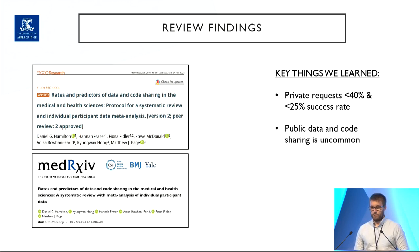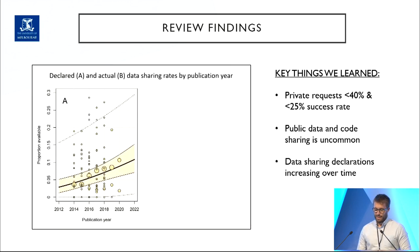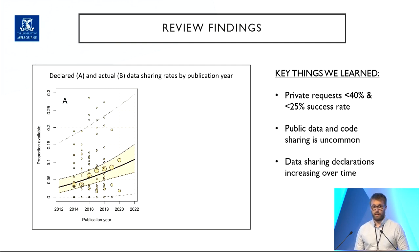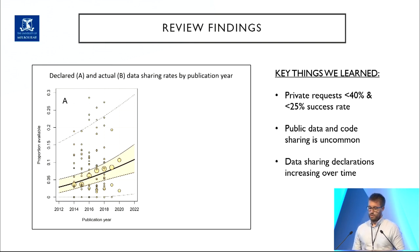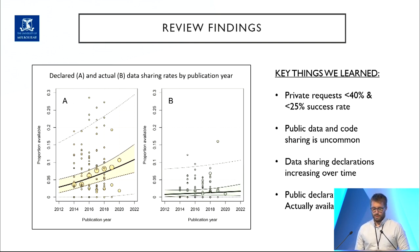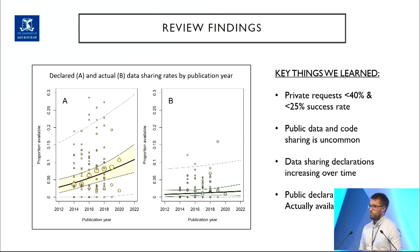However, what we did note is that declarations of public data sharing are increasing over time — we estimate from roughly 4% in 2014 to 9% in 2020. However, what we think is that the number of people who say their data is publicly available doesn't seem to actually be the case. There appears to be a gap between the number of people who say their data is available and what you actually find when you go to look for it.